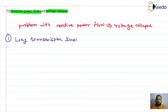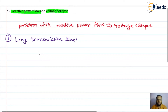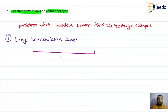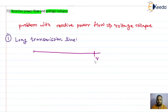What is the problem in the long transmission line? Suppose we don't have control over this long transmission line, and we are not going to provide any compensation or reactive power control. Then the receiving end buses will experience a problem with voltage.